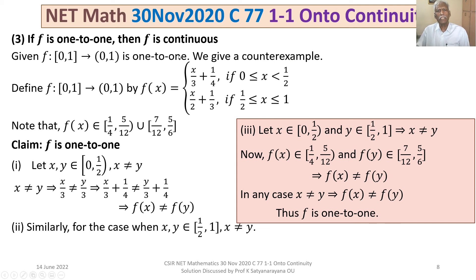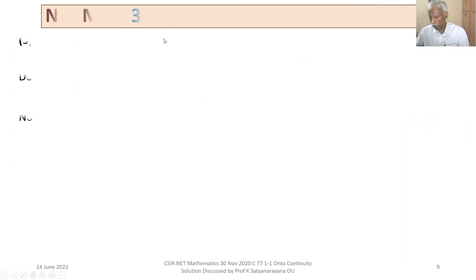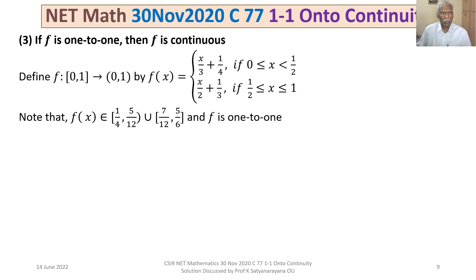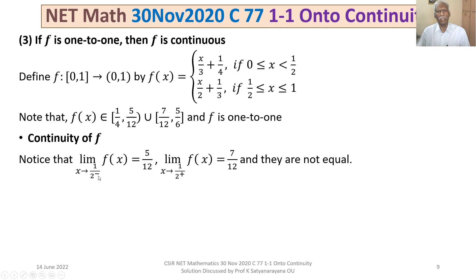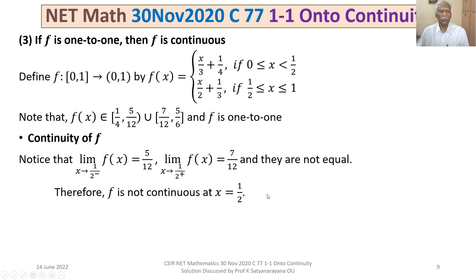Now we discuss continuity of f. The function is continuous everywhere except possibly at x = 1/2. The left-hand limit as x → 1/2⁻ is 5/12, and the right-hand limit as x → 1/2⁺ is 7/12. Since these limits are not equal, f is not continuous at x = 1/2.